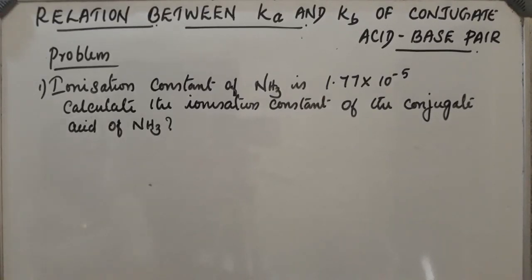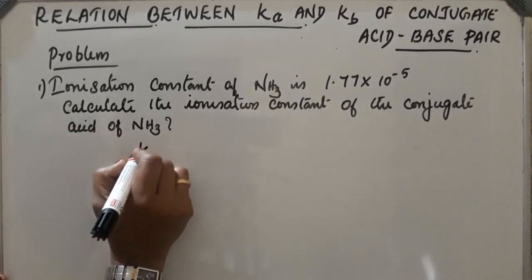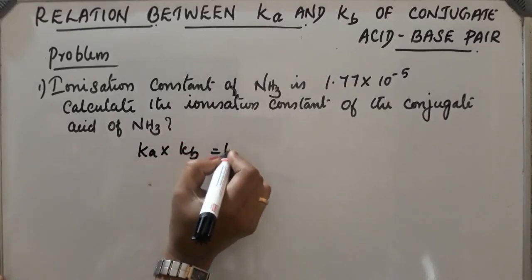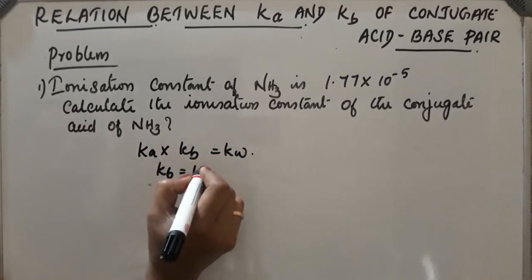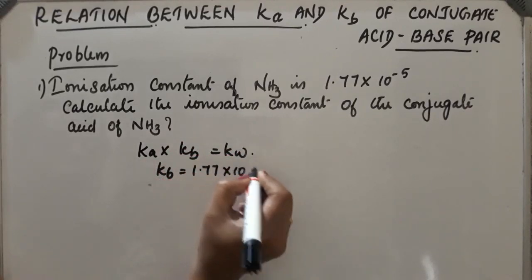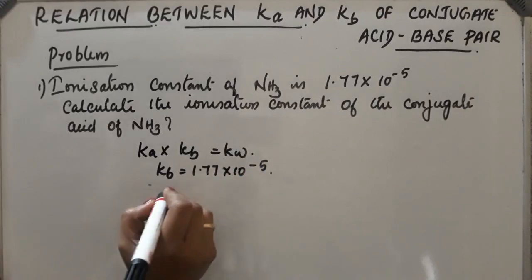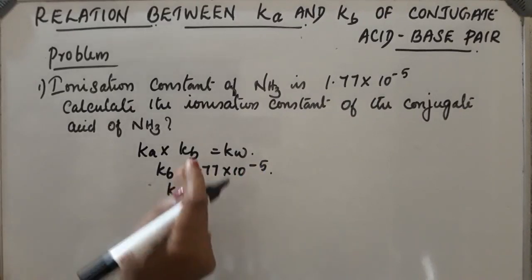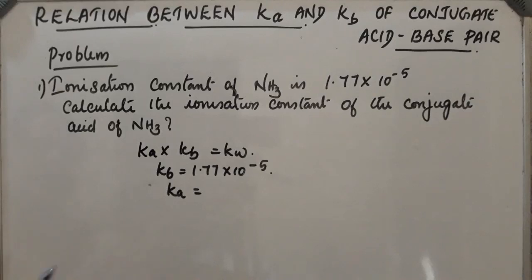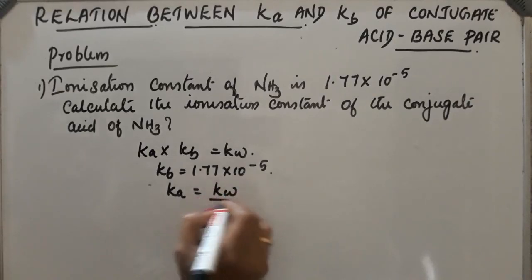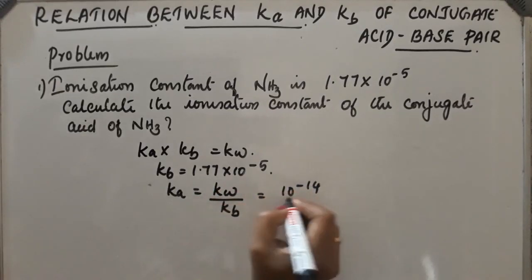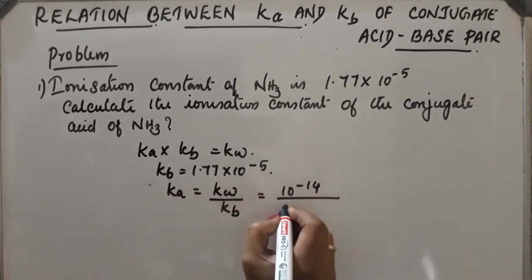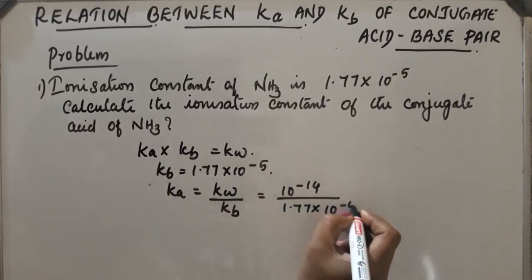We know the relation between Ka, Kb, and Kw. That is Ka × Kb = Kw. Now Kb is given, 1.77 × 10^-5. So Ka will be, Ka is the ionization constant of the conjugate acid of ammonia. This will be equal to Kw by Kb. Kw is a constant we know, 10^-14, and Kb is 1.77 × 10^-5.